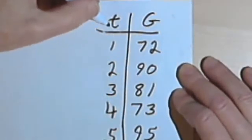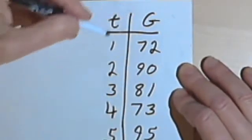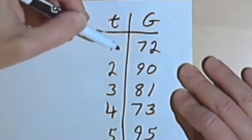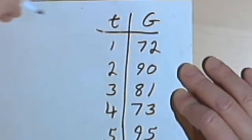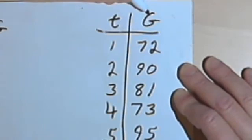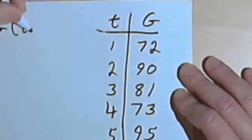Since I've got an input and an output and I've got only one output for each input, this would be a function. And I could call this function G, since that's what the output is. The input is t, so I'm going to call it G of t.